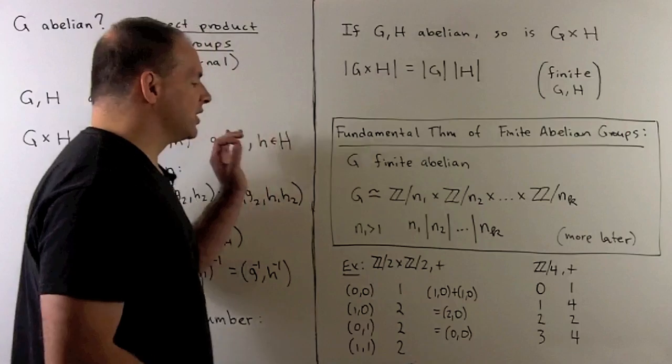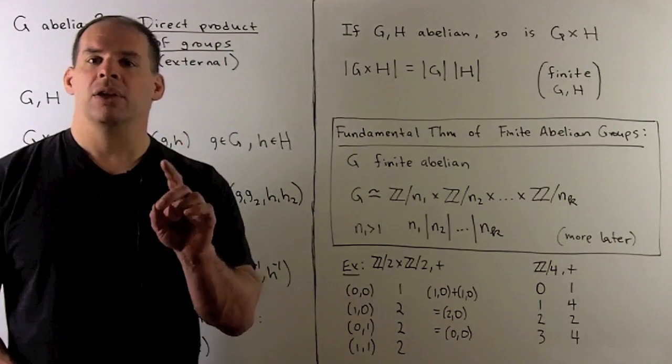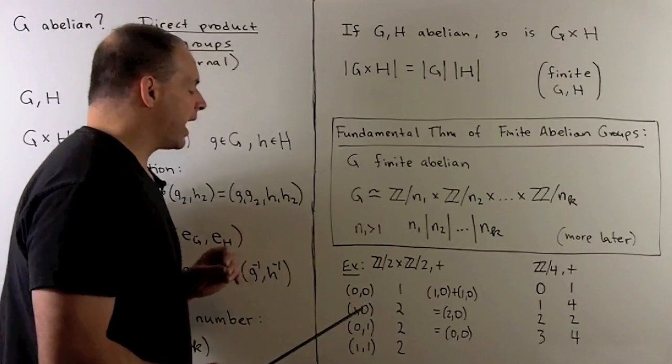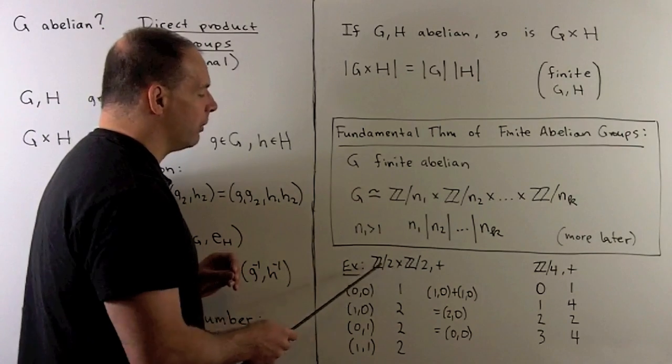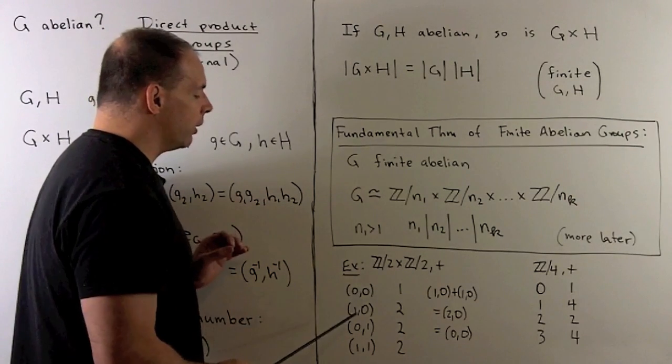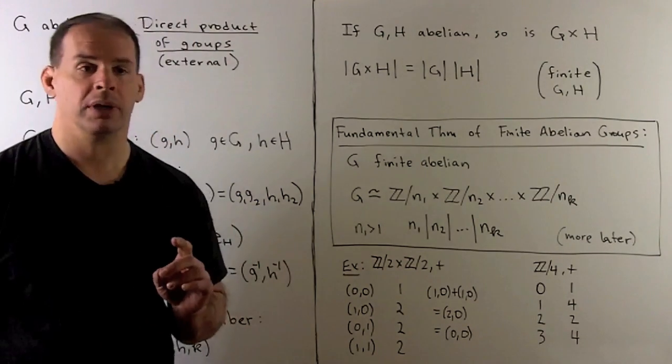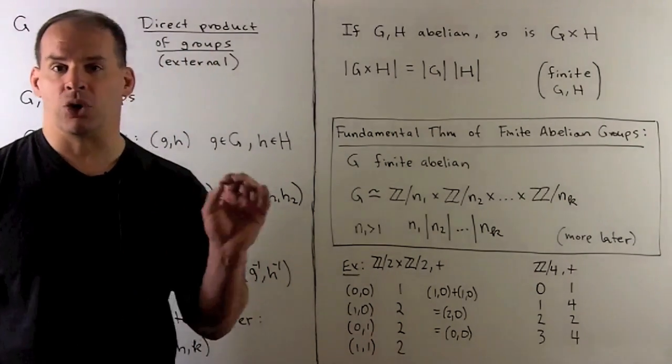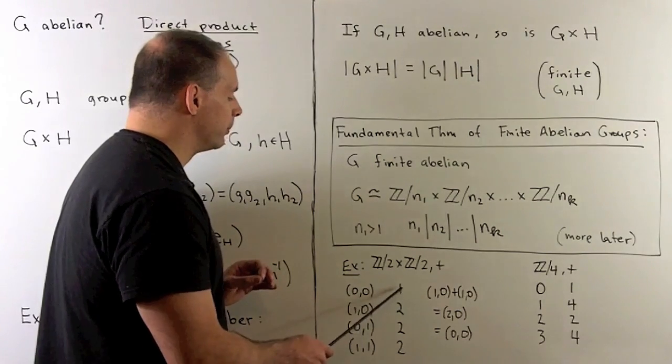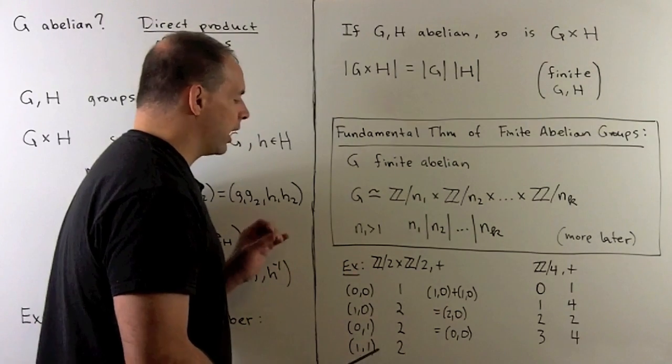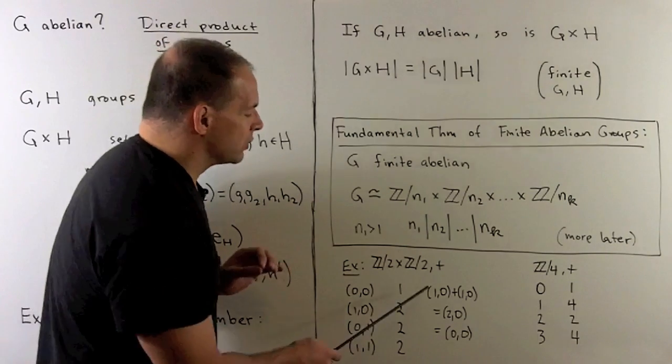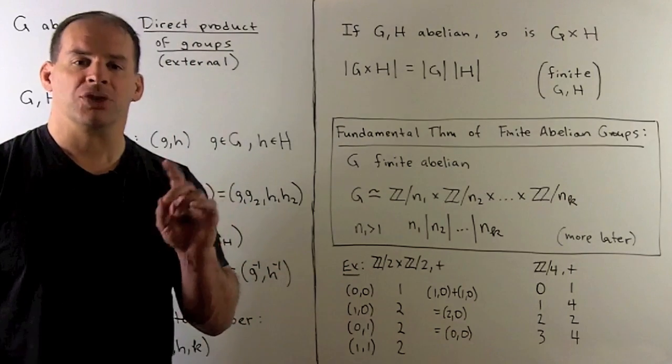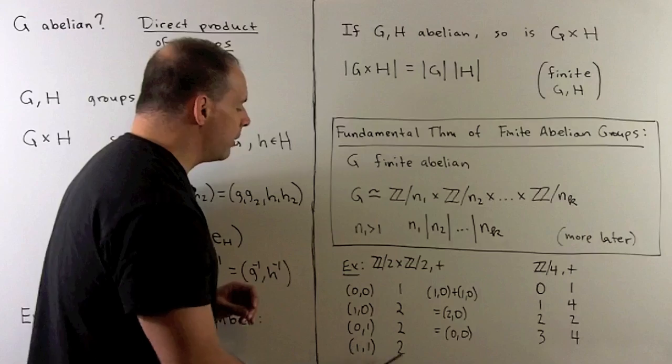For a concrete example of a direct product, we're going to take the two group with itself, so we have Z2 cross Z2 with operation addition. What elements do we have? We're going to take all possible pairs of elements from these two groups: (0,0), (1,0), (0,1), and (1,1). Zero is the identity element in Z2, so (0,0) is our identity element in the direct product with order one. For the other elements, we'll note if we add them to themselves - for instance, (1,0) plus (1,0) gives me (2,0). Since we're over Z2, that turns into (0,0), the identity. So all of these elements have order two.